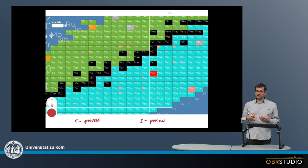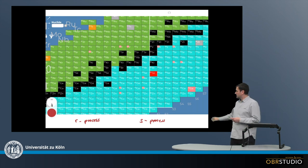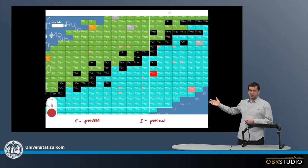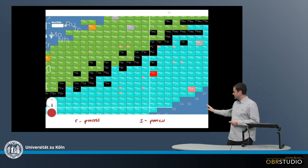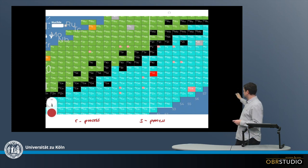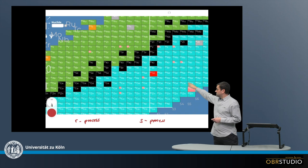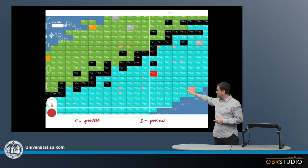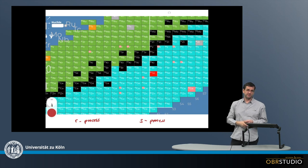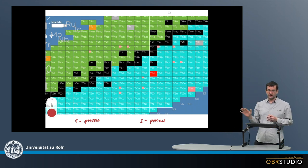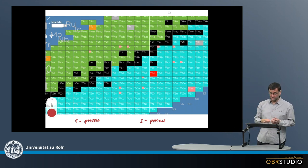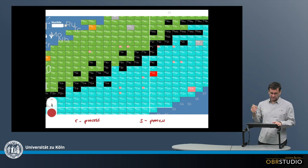What does this mean for nucleosynthesis, and how does nucleosynthesis work with these two processes? This can be illustrated by looking at the chart of nuclides shown here. On the x-axis, the number of neutrons increases. Along the y-axis, the number of protons increases, so the various chemical elements are stacked upon each other. The chart of nuclides is a systematics for nuclides, not for the electron shell, which is the periodic table.